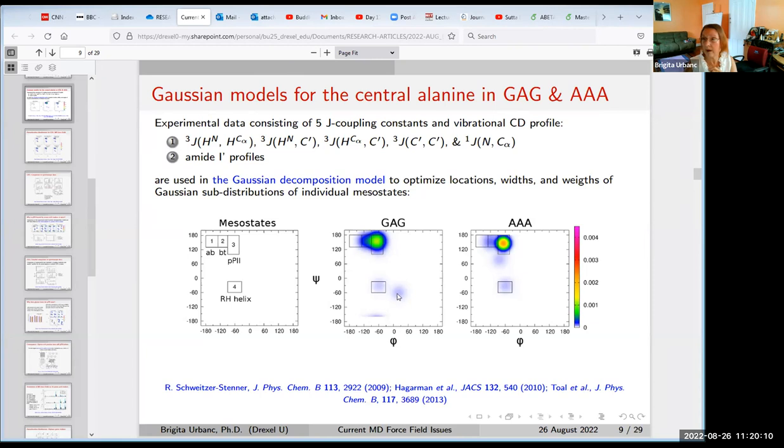What you get in the case of GAG is this picture here. Can you see my mouse moving around? So this region here is this polyproline 2 region. Alanine—and if you do the same thing for the guest residue alanine in AAA, the polyproline is even more pronounced. This Gaussian model Ramachandran distributions will serve as a benchmark when we're now trying to compare what molecular dynamics force fields do.